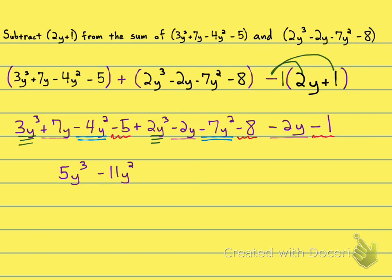And then in the pink, I have plus 7y, minus 2y, minus 2 more y's. So that is going to be 7 minus 4 is 3. So that will be a positive 3y.